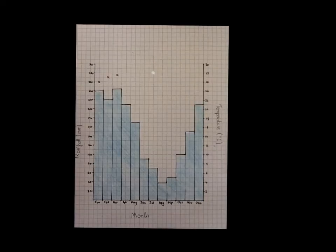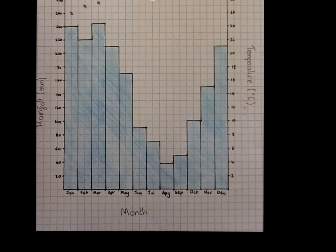With all of our rainfall data plotted, we can then start to think about plotting the temperature figures also. To plot the temperature figures, we always use a line graph. When plotting the temperature in a line graph, we always make sure that any points that we mark on are in the middle of each month. We don't plot them at the beginning or the end of the month because this could cause some confusion.